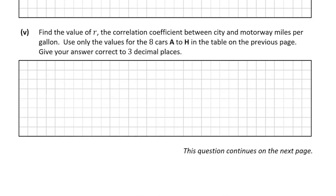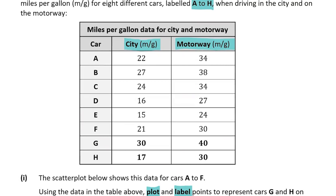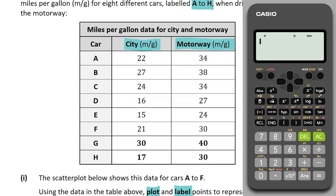The last part of question A requires good calculator skills. It asks us to find the value of R, the correlation coefficient between city and motorway miles per gallon, using only the values for the eight cars A to H, correct to three decimal places. I'm using a Casio calculator. If you have a Sharp calculator, I'd recommend searching on YouTube for how to find the correlation coefficient on your specific model.